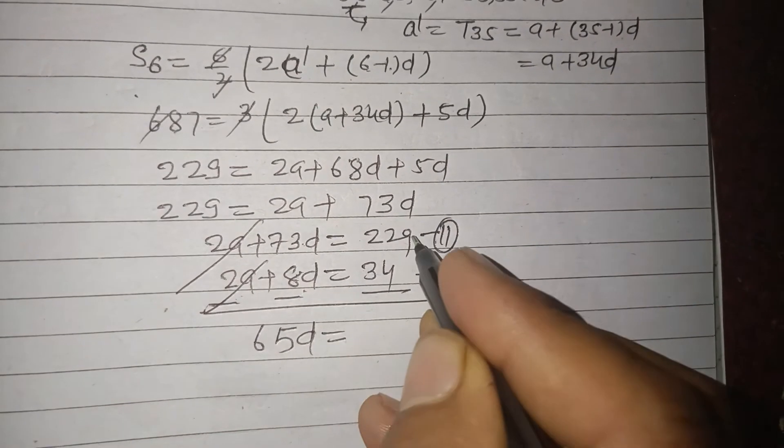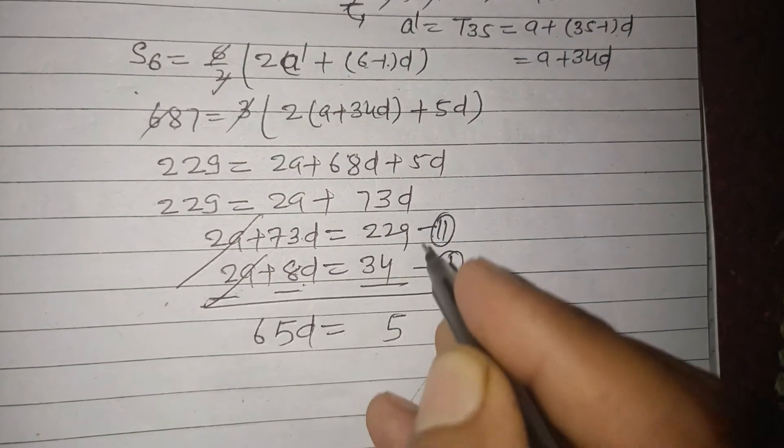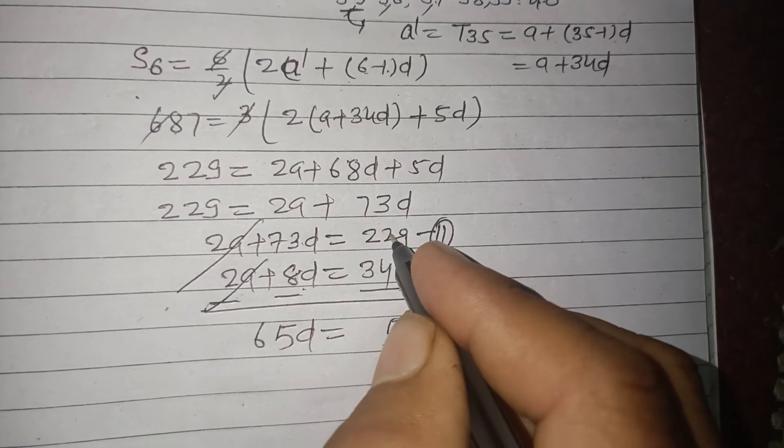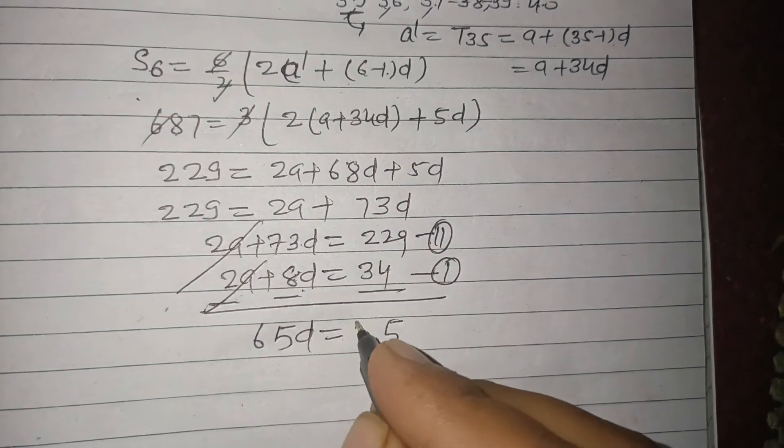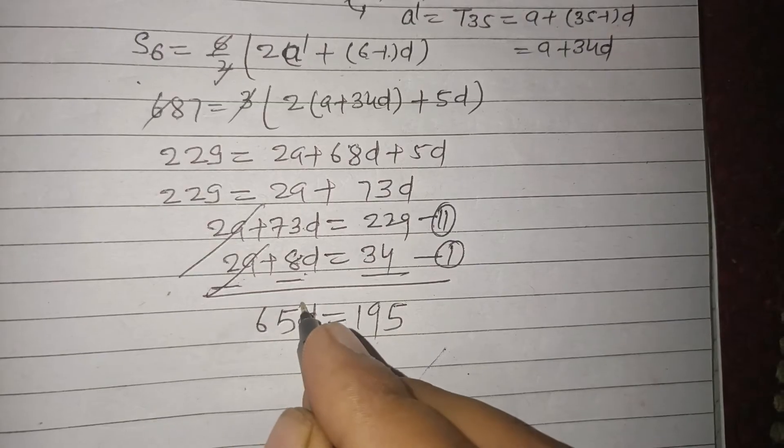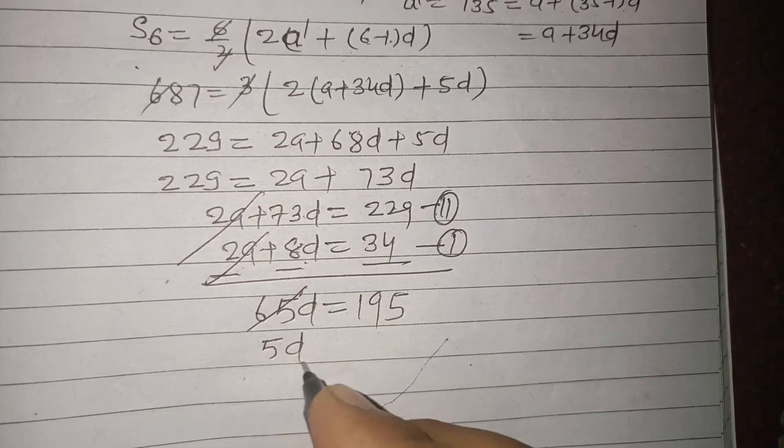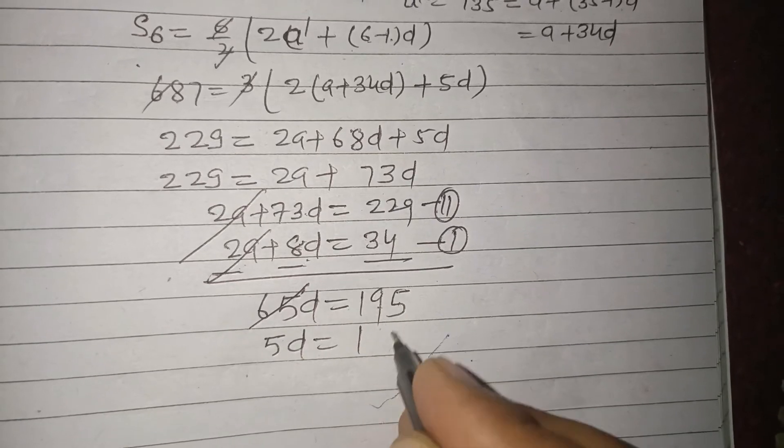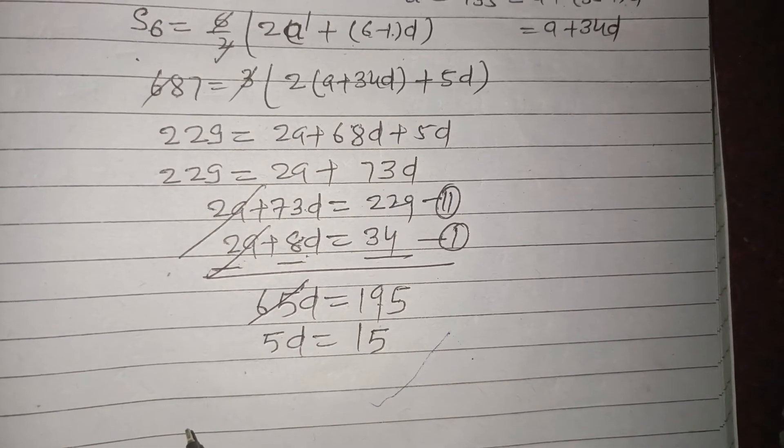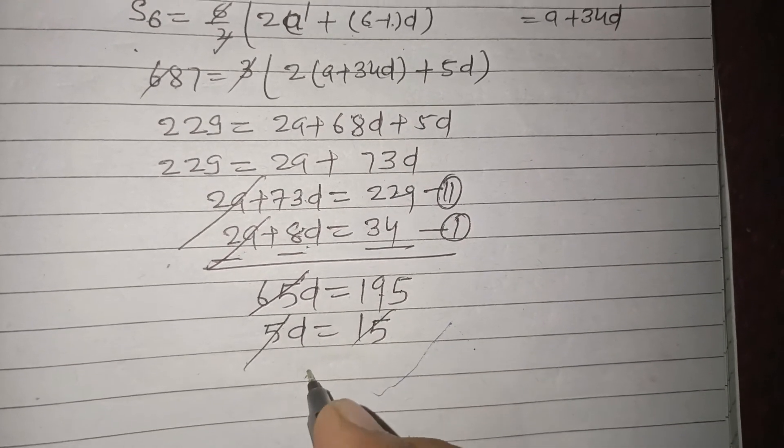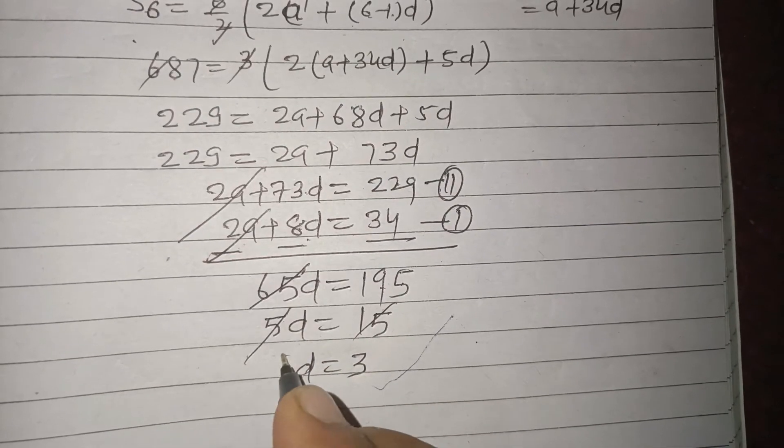65D equal to 229 minus 34, which is 195. So dividing by 13, we get 5D equals 15. Therefore D is 3, which is required to us.